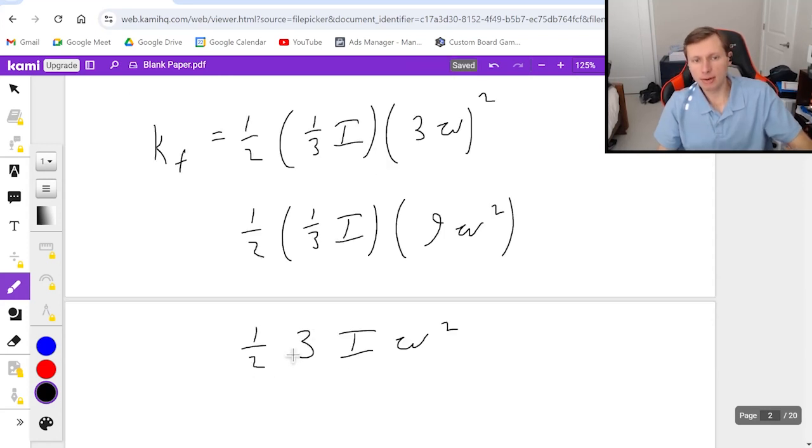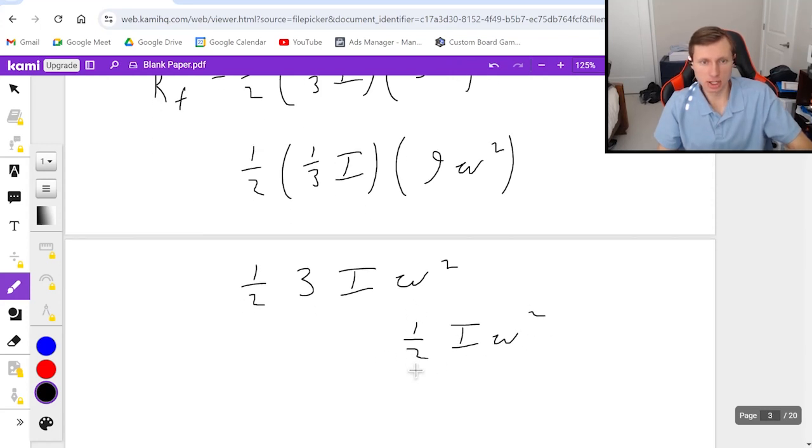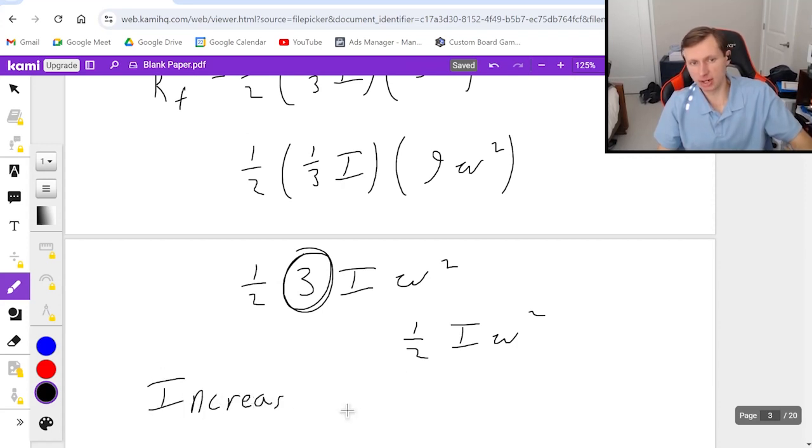The one-third and the nine reduces to just three I omega squared. And so comparing it to the original one-half I omega squared that was the initial kinetic energy we would say this increased by only a factor of three and that is our final answer.